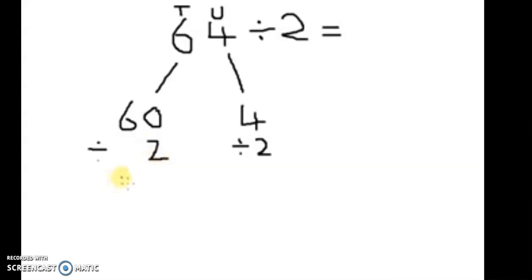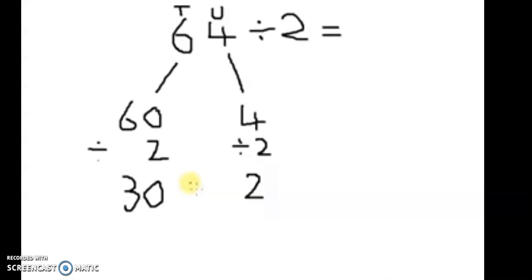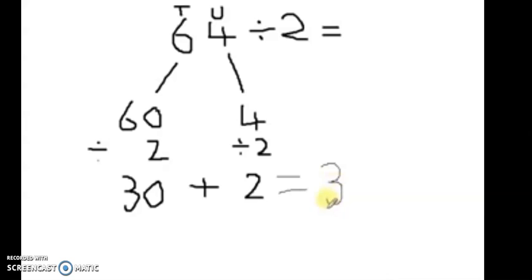What is 60 divided by two? Ask yourself: what is half of six? Half of six is three, so 60 divided by two is 30. Then we look for half of four. What is half of four? Half of four is two, so four divided by two is two. Now this is the tricky part — you have to remember that we have 30 and we have two, so we are going to add: 30 plus 2 is 32. Which means half of 64 is 32.